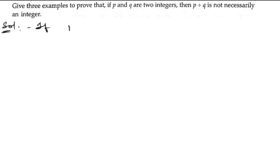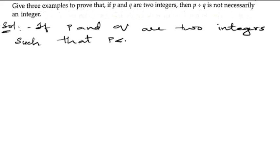If p and q are two integers, such that p is less than q—whenever we get p less than q, suppose two by four, as I just said, or one by three, or two by five, like that—then when we divide p by q, p÷q is not necessarily an integer.